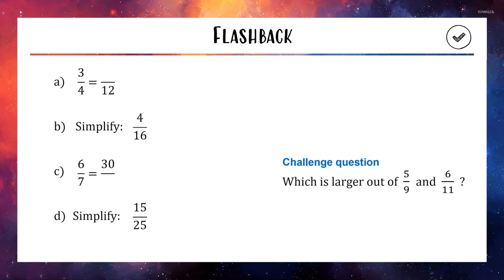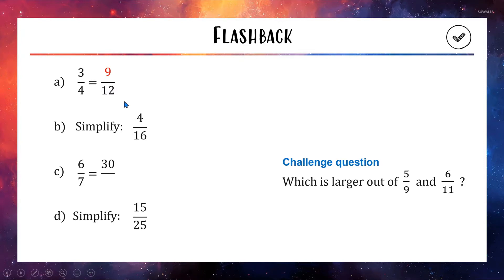For question A, we're trying to figure out what number makes these two fractions equivalent. The way we did this is: 4 turning into 12 is being multiplied by 3, so we'll also multiply the top by 3 and we'll get an answer of 9. So 9 out of 12 is the same fraction as 3 out of 4.